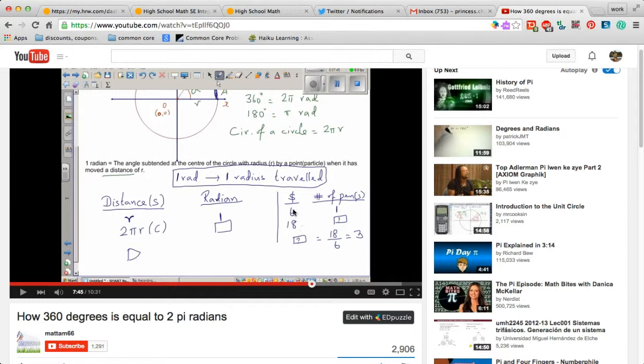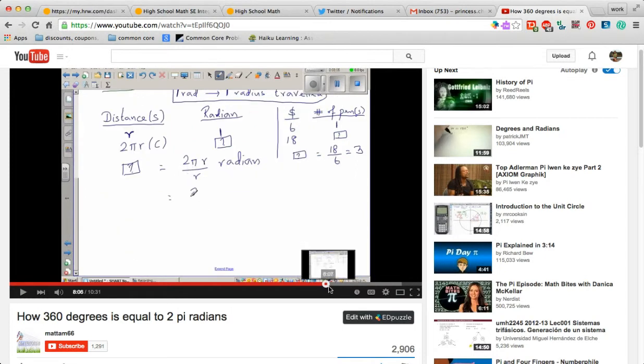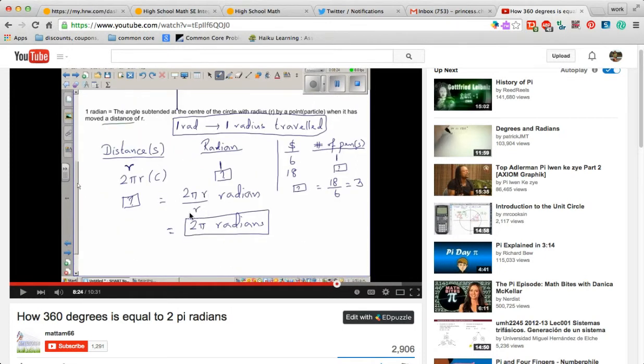Remember how we wanted to find this question right here? So what did we do? We went eighteen divided by six. Well, we're gonna do the same thing here. We're gonna go two pi r divided by r, and when you do that the r's cancel out and you are left with what? Two pi radians.